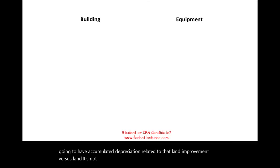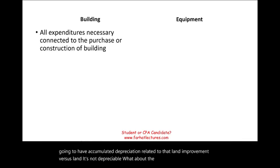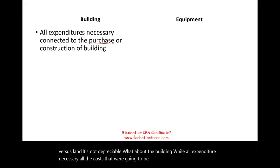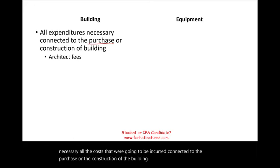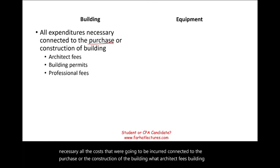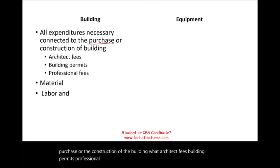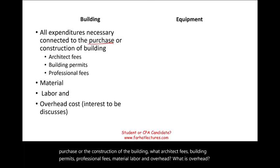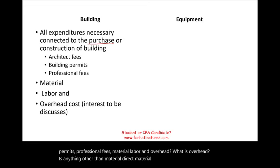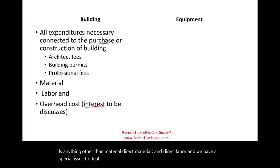What about a building? All expenditures necessary for the purchase or construction of a building are included — such as architect fees, building permits, professional fees, material, labor, and overhead. Overhead includes anything other than direct material and direct labor. There is also a special issue regarding interest capitalization during construction, which we will discuss separately.